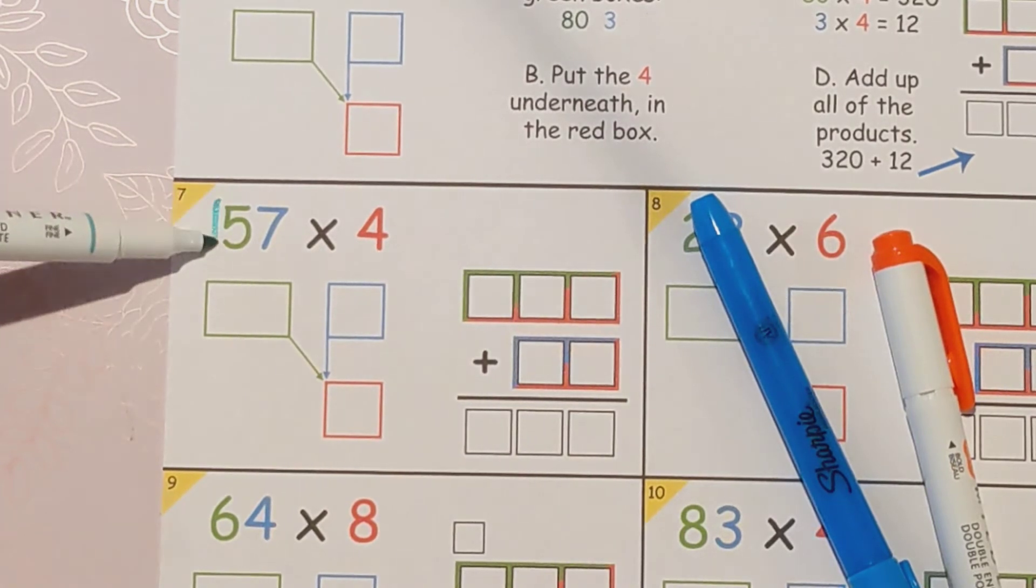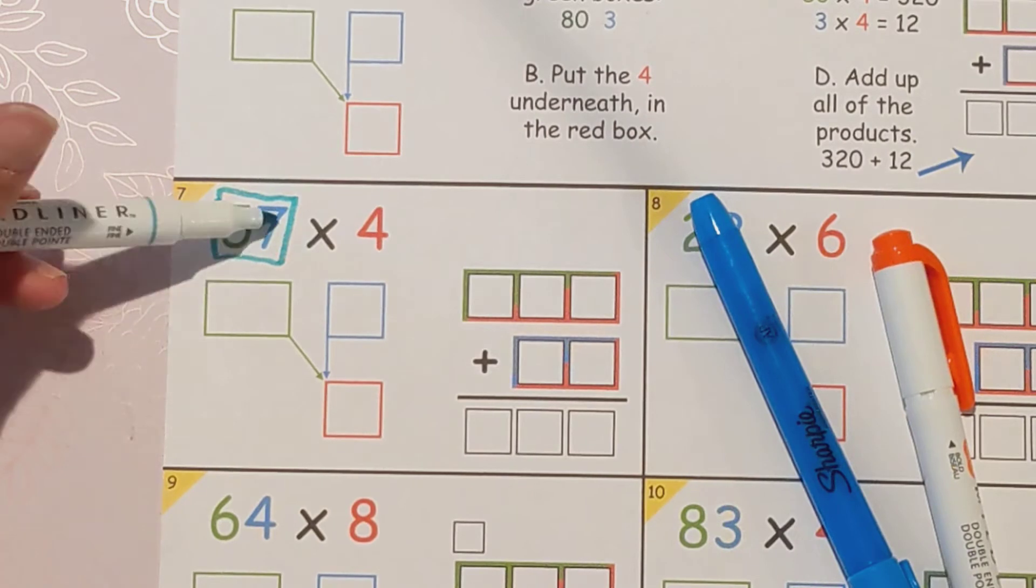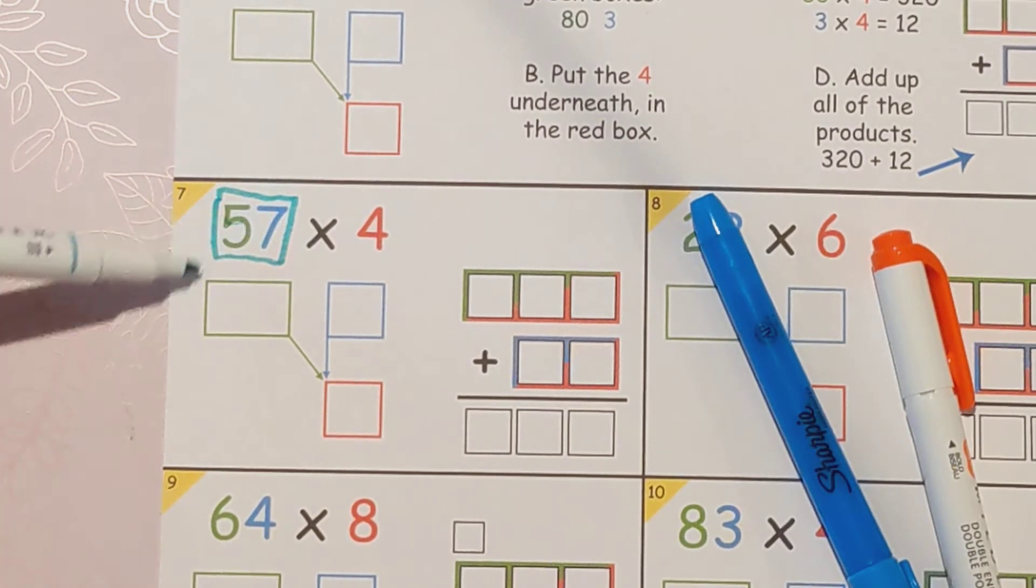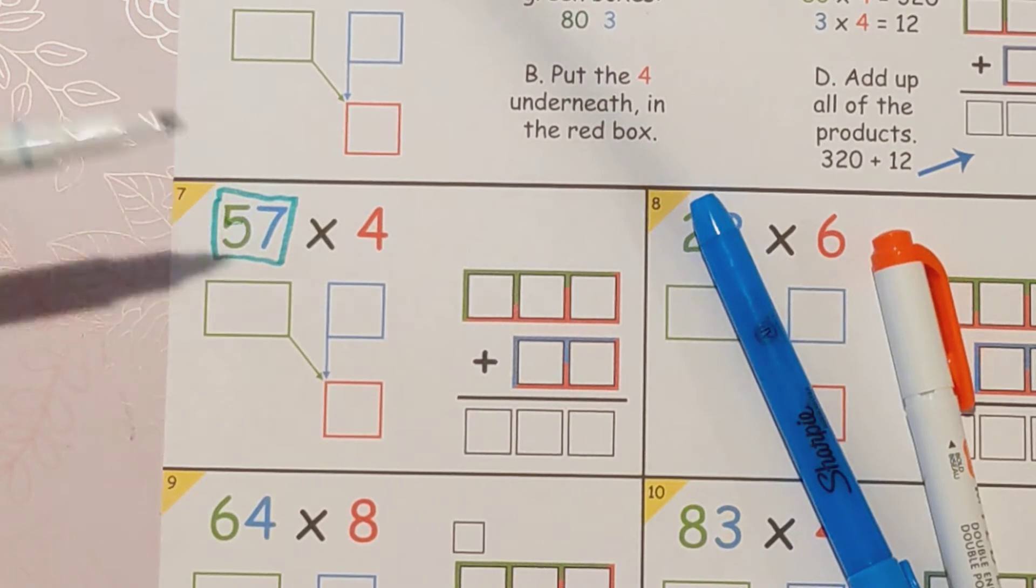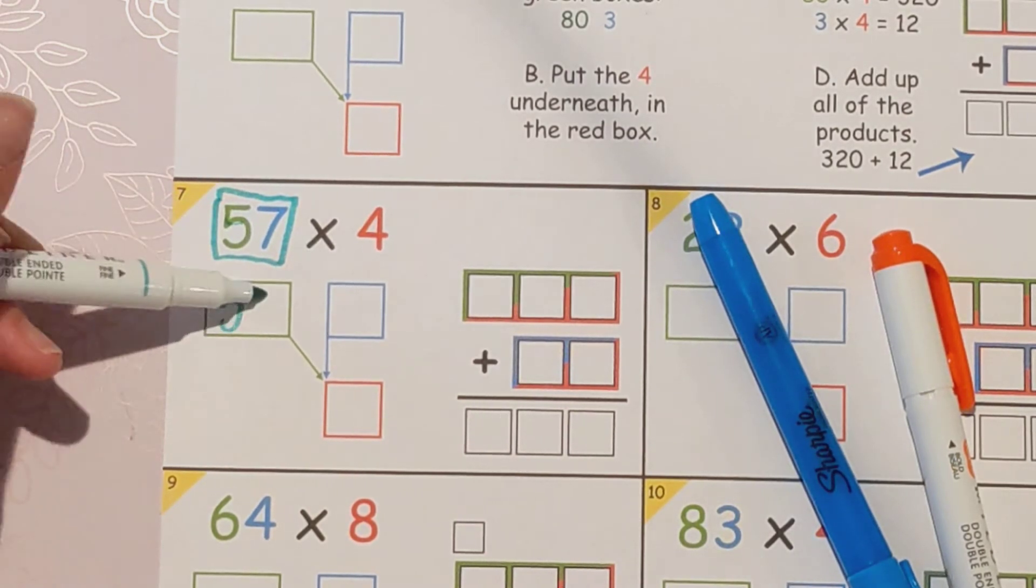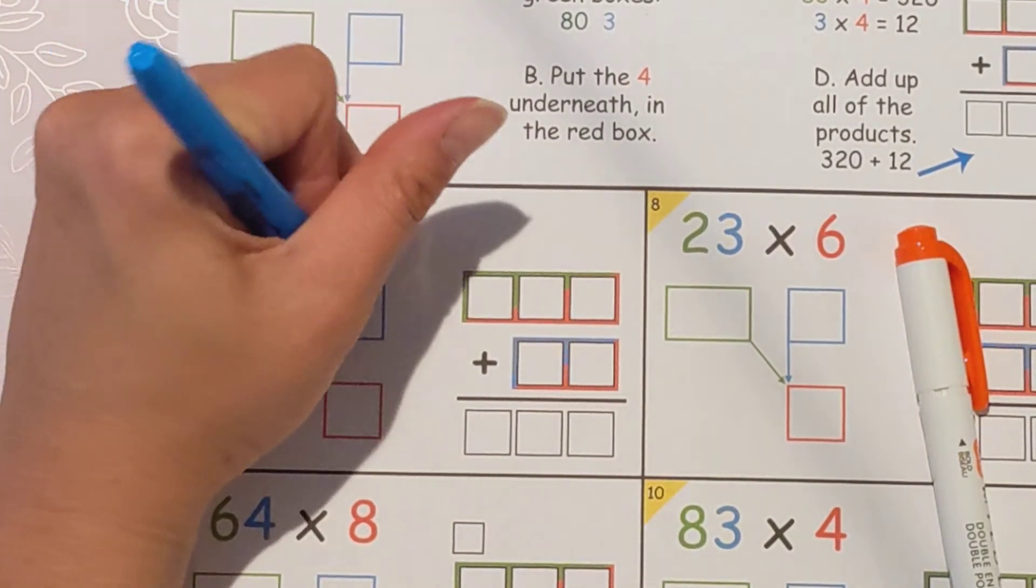Step one is to take this number here and put it into expanded form and the colors will help guide you too. So the five is green it'll go in this box and seven is blue. That five is really 50. The seven is a 7. So this is 57 in expanded form.